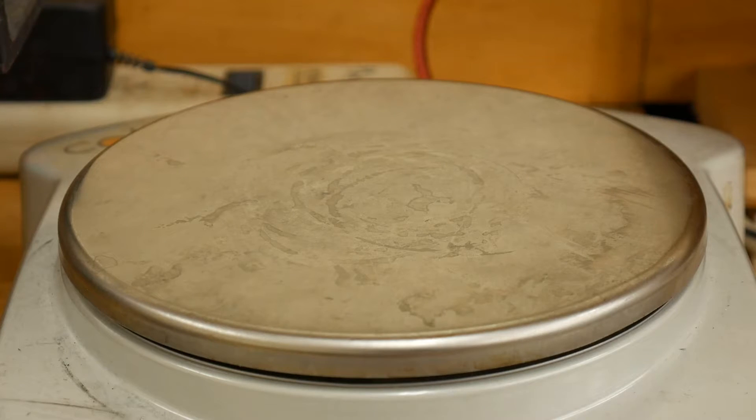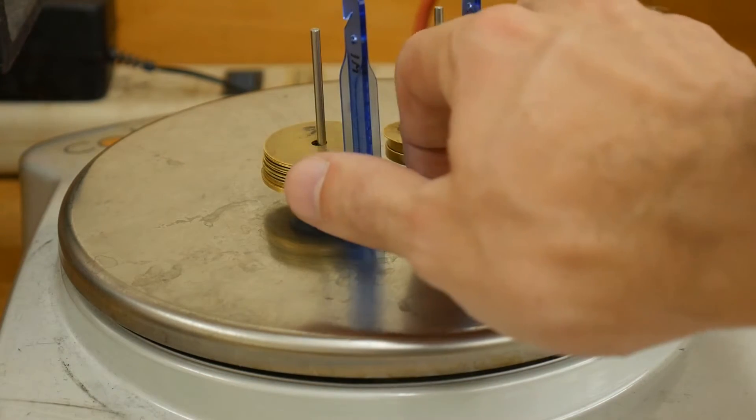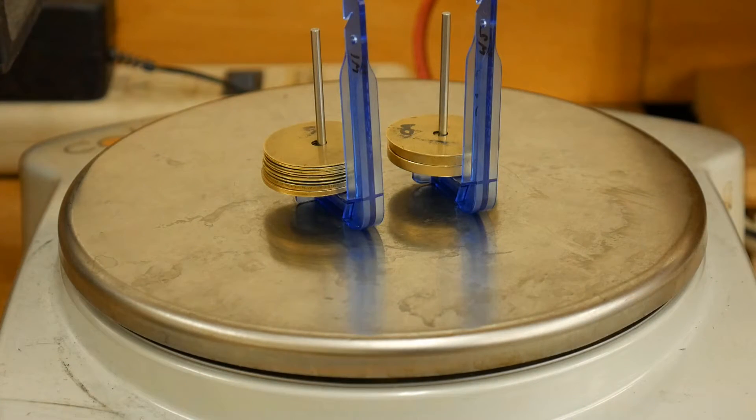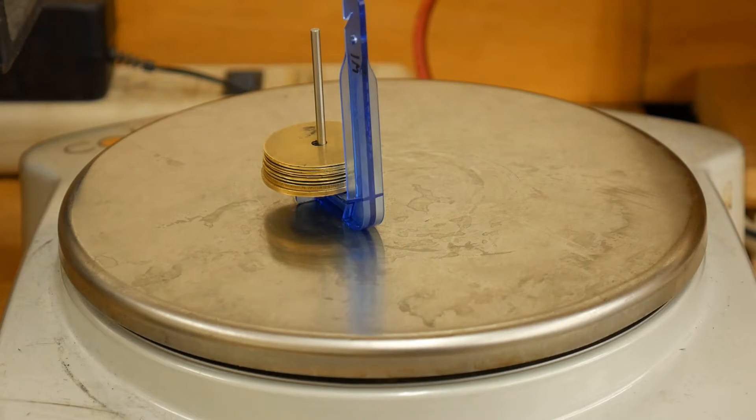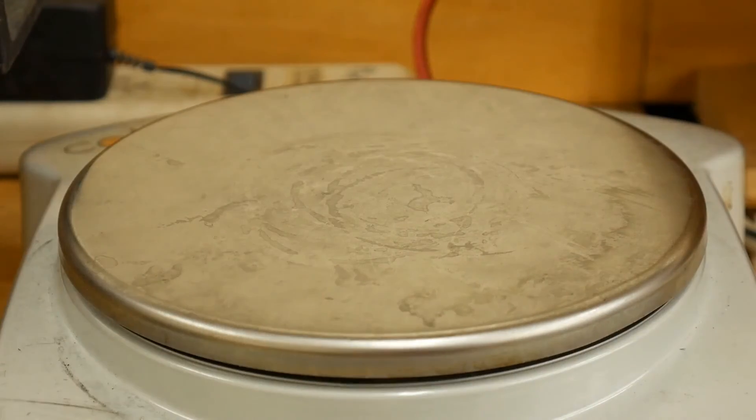Place both mass hangers and all of the masses on the scale to obtain a measurement of the total mass. You'll be using that value throughout the experiment. Then measure the mass hangers individually with their respective masses before you begin the first trial.